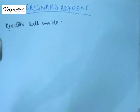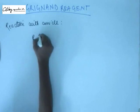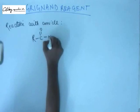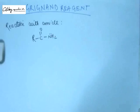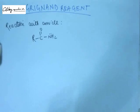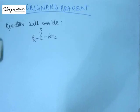Now we will see the reaction of Grignard reagent with amides. Amides are functional groups having C=O and N. If Grignard reagent is going to react with this amide, the first reaction we have to think of in any situation is an acid-base reaction — whether there is a possibility of an acid-base reaction or not.